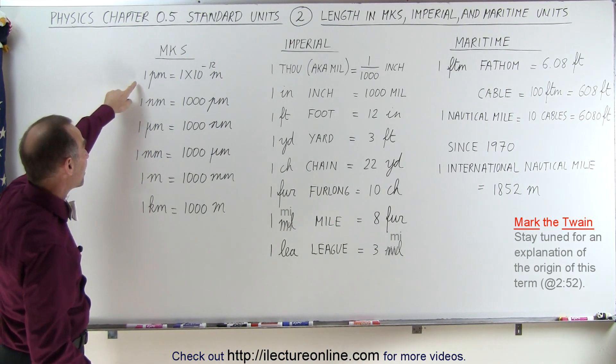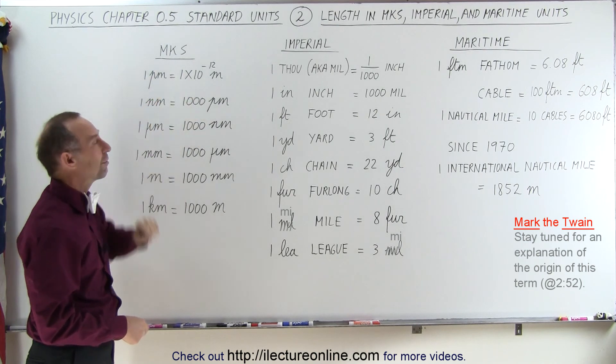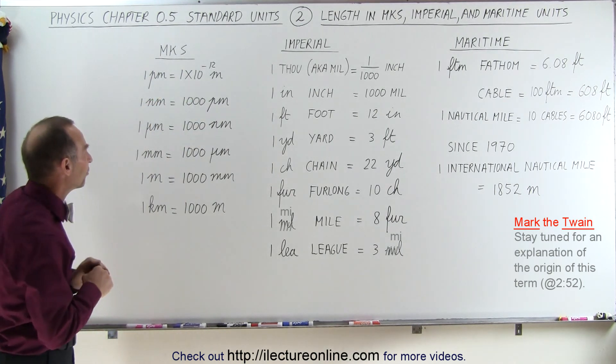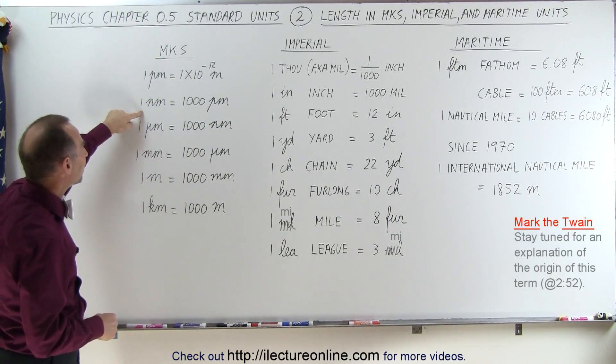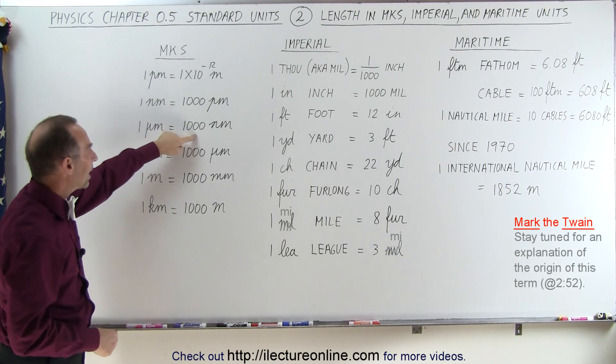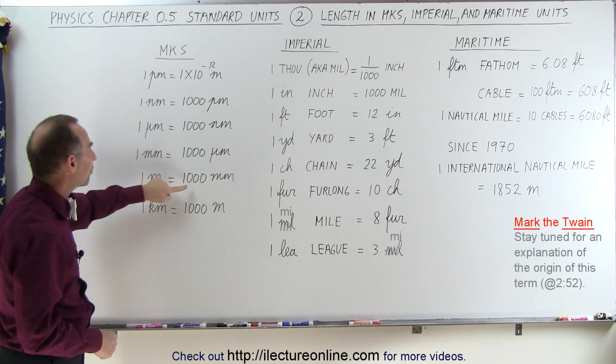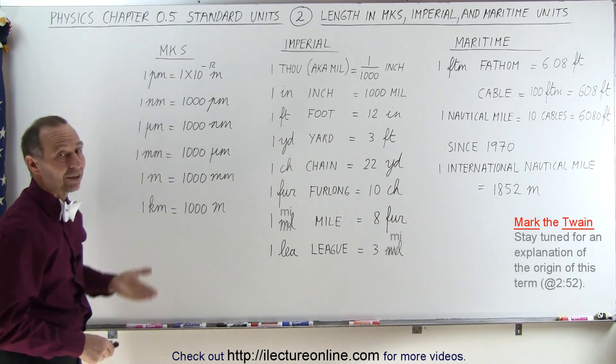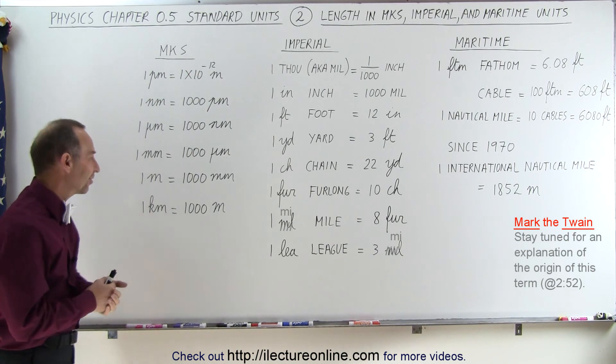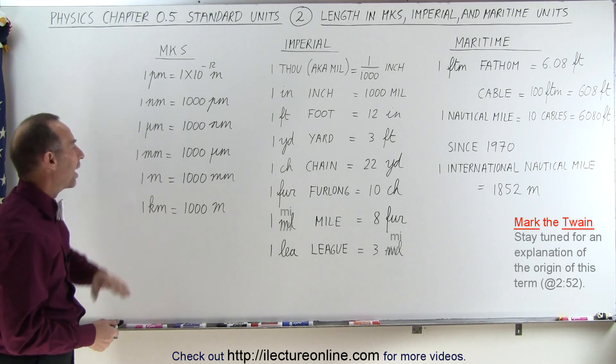Going back to length, we remember from the previous video that one picometer was one trillionth of a meter, one times 10 to the minus 12 meters. A nanometer is a thousand picometers, a micrometer is a thousand nanometers, a millimeter is a thousand micrometers, and a meter is a thousand millimeters. That makes the MKS system very easy to use, and a kilometer is equal to a thousand meters.